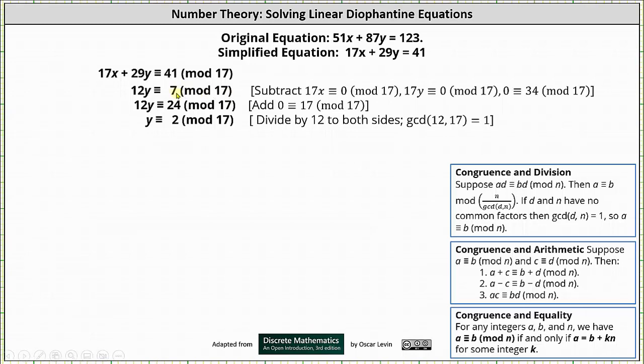In this case, if we add 17 to 7, we get 24, which is a multiple of 12. Again, we can add 17 to 7 because 0 ≡ 17 (mod 17). This gives us the congruence 12y ≡ 24 (mod 17), and now we can divide both sides by 12.